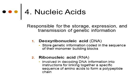The other type of nucleic acid is ribonucleic acid, or RNA. There are a few different forms and functions; RNA is involved in decoding DNA information into instructions, and those instructions are used to link together a specific sequence of amino acids to form a polypeptide chain. So RNA is used to express genetic information and help make all of our different proteins.